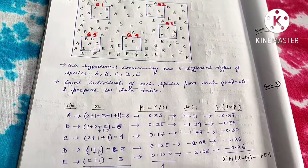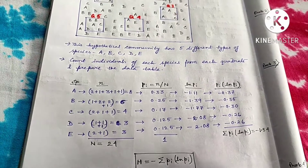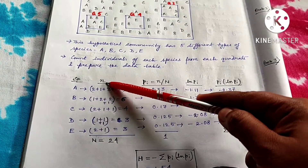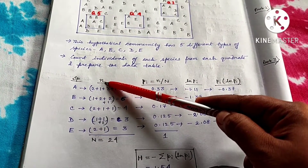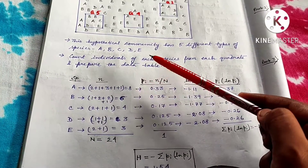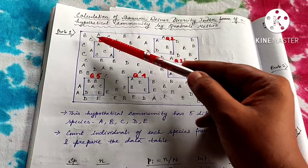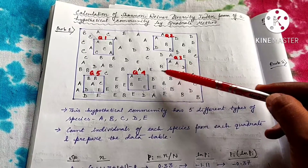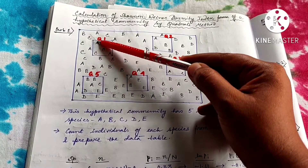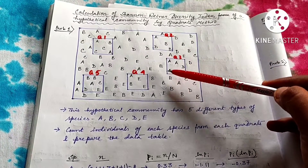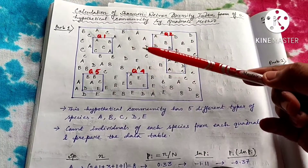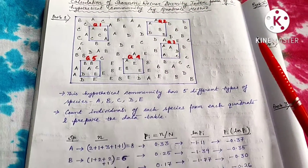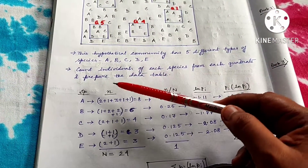See how to prepare the data table for calculating the Shannon-Wiener index. The species are A, B, C, D, and E. Now their individual numbers: for species A it is 8. Why 8? Because in quadrat 1 there are 2 A species, and adding across all quadrats: 2+1+1+1+2+1 = 8. Like that, calculate the total number of individuals for each species. We get that for species A the total number of individuals is 8.